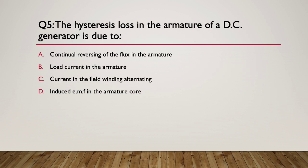Question five: the hysteresis loss in the armature of a DC generator is due to what? And that can be in a generator or it can be in a motor — it doesn't really matter. Hysteresis loss is hysteresis loss. A: continual reversing of the flux in the armature. B: the load current in the armature. C: current in the field winding alternating. D: induced EMF in the armature core. Pause here.